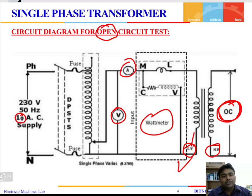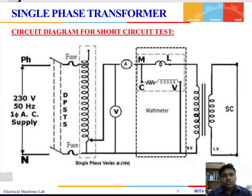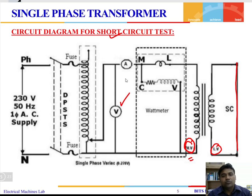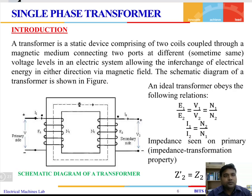For the short circuit test, you will be short circuiting the low voltage side, and all the measuring instruments are connected on the high voltage side. You should never short circuit the high voltage side. So all measuring instruments — voltmeter, ammeter, or wattmeter — are connected on the high voltage side.